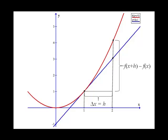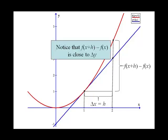We also have a corresponding change in outputs, which is f of x plus h minus f of x, which is approximately delta y. That result gives us that delta y is approximately equal to f of x plus h minus f of x.